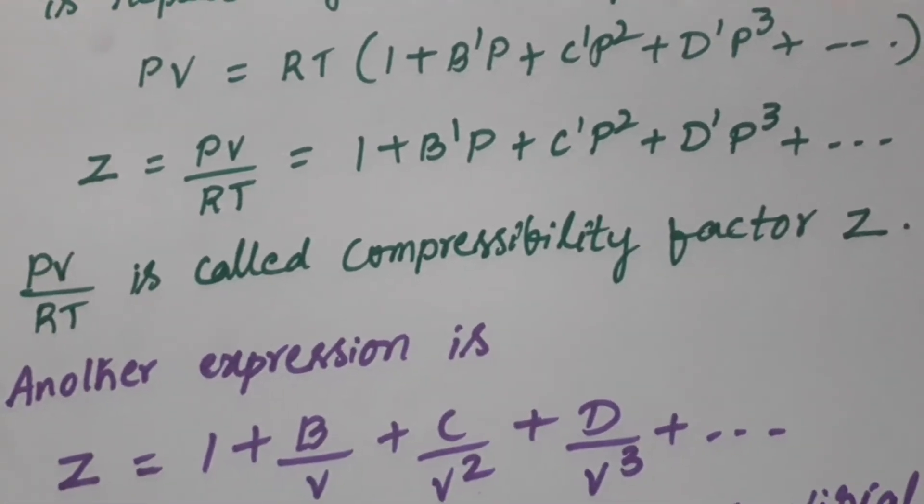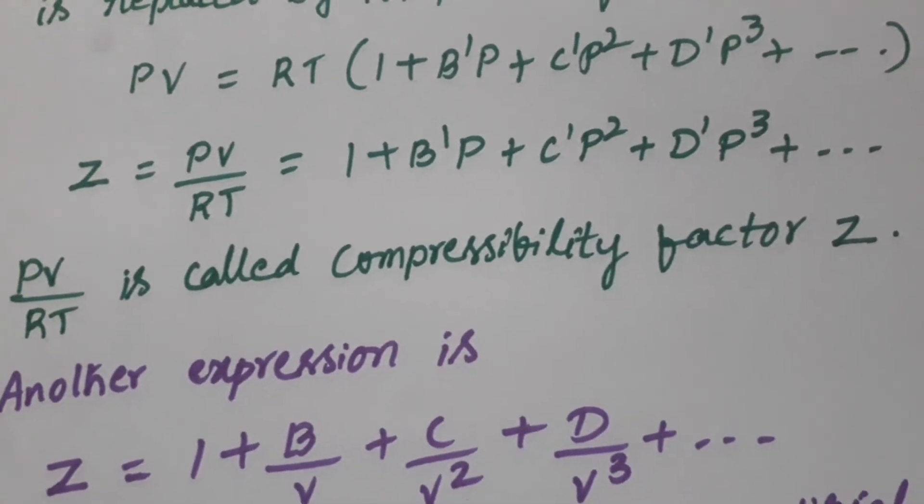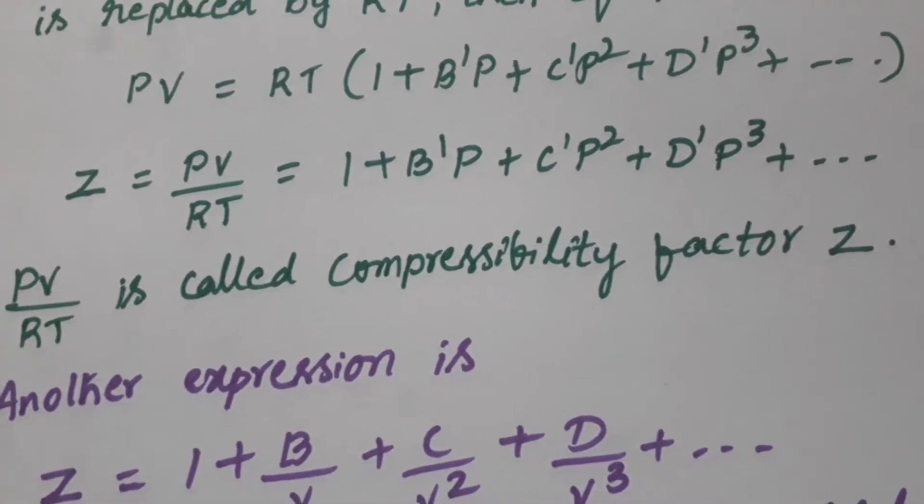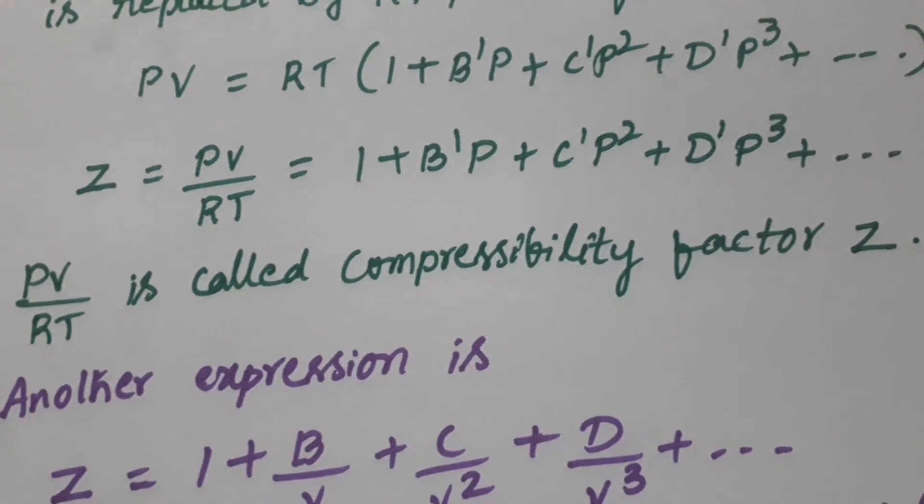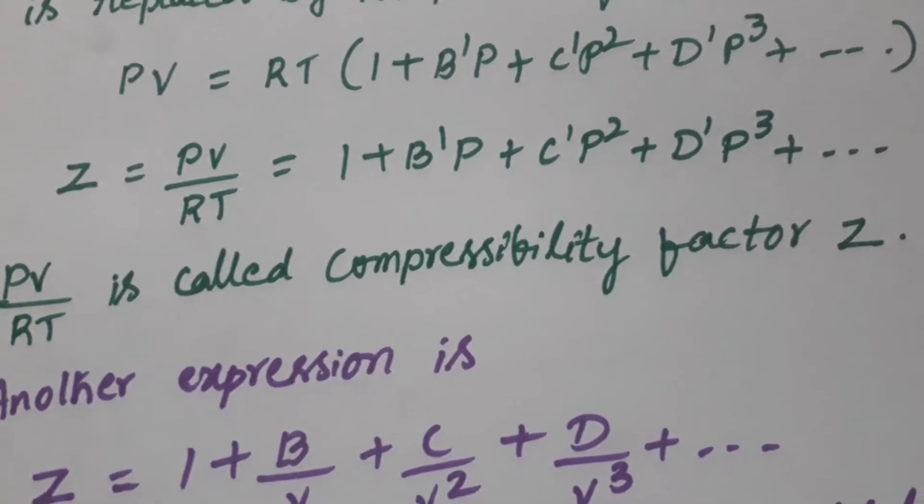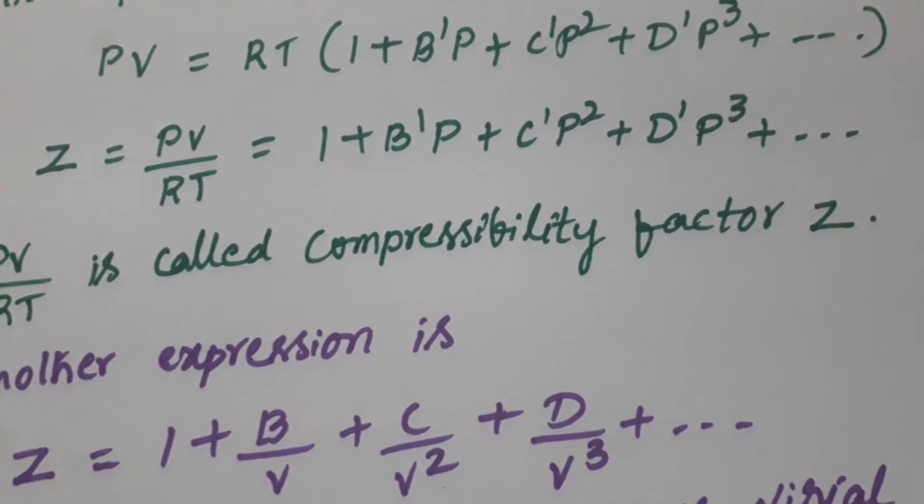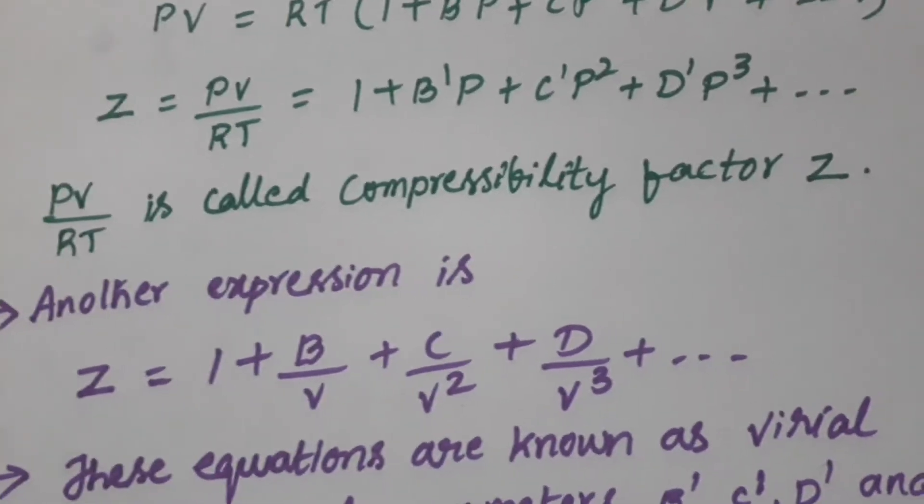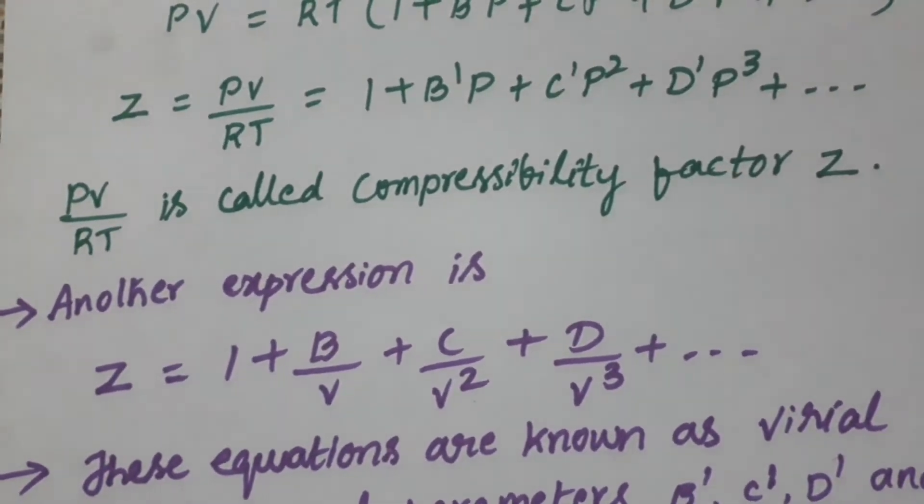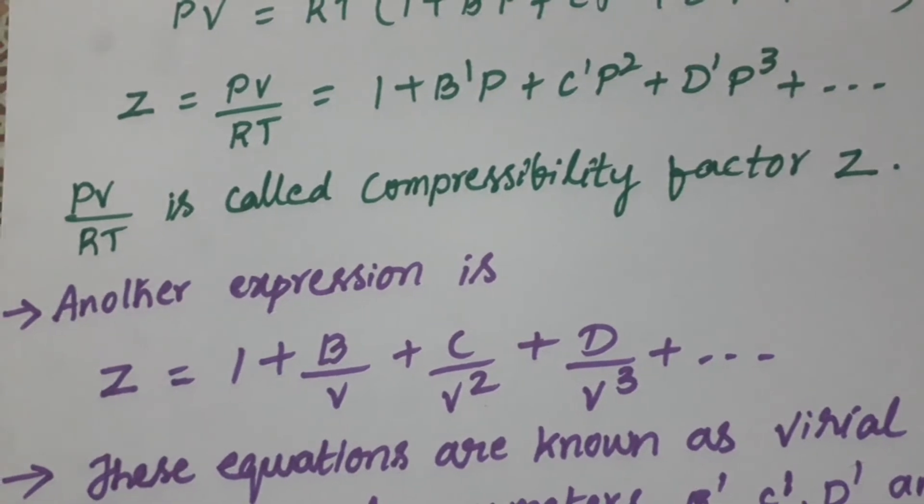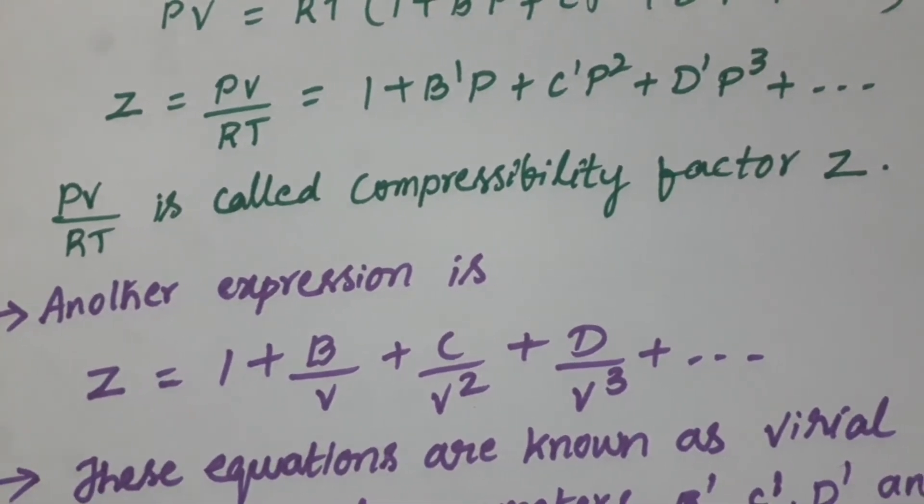So now we can write Z is equal to PV by RT. By substituting in the equation, we can write this which is equal to 1 plus B'P plus C'P² plus D'P³ and so on. So this PV by RT is called compressibility factor and this is represented by the symbol Z.